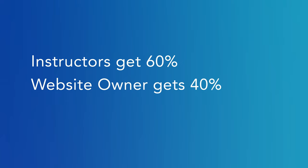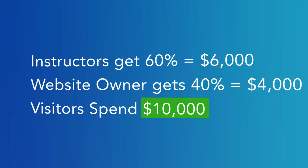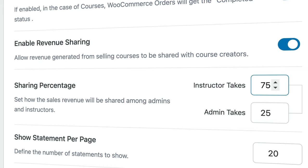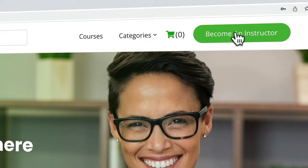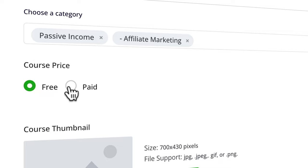Let's do some math. If your instructor gets 60% of every sale and you get 40%, and a visitor spent $10,000 in a month on courses on your website, that means your instructors make a total of $6,000 and you will make $4,000 in that month. In this tutorial I will show you how to attract tons of instructors and generate monthly growing revenue. We'll set the commission structure and set our website up so a new visitor can become an instructor — when we approve them they can upload their own courses, set a price, and make it look great.